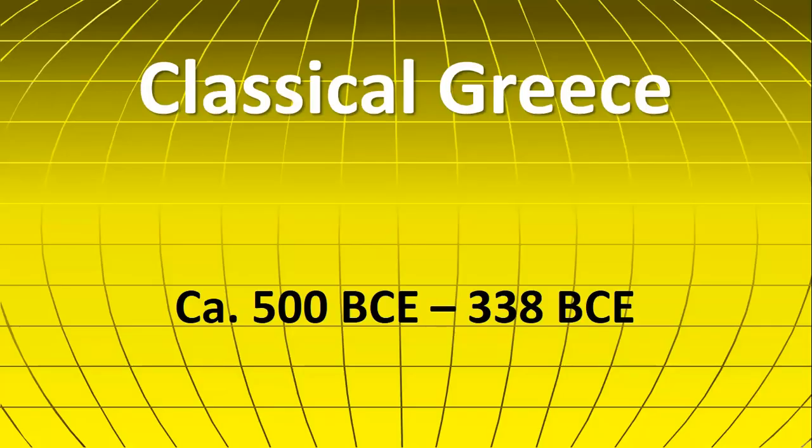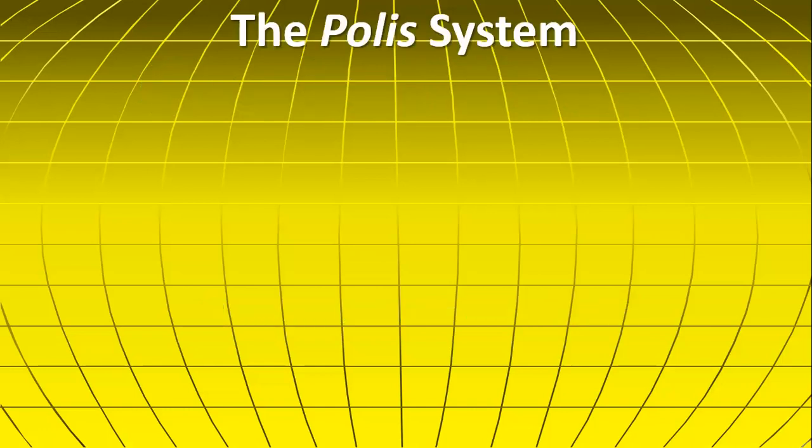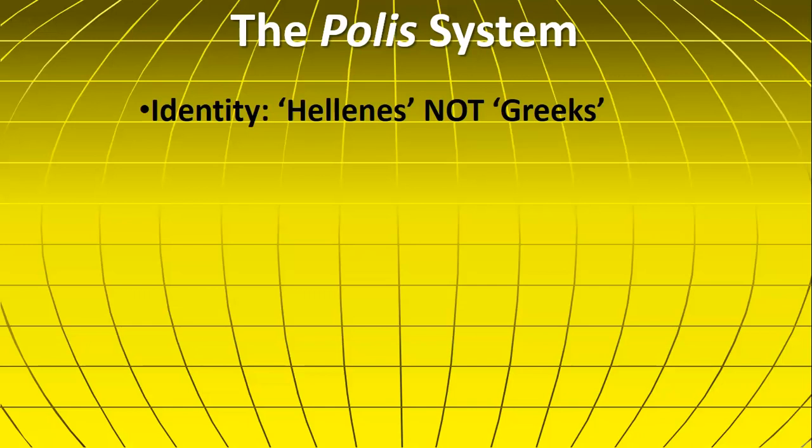That takes us into the classical period of ancient Greece. The system that was used was called the Polis system — Polis is a word that means city-state. The Greeks did not call themselves Greeks; they called themselves Hellenes. They all thought they were descendants from a figure named Hellene, the survivor of a flood. They recognized they didn't have the same government — they were city-states — but they did speak the same language and worshipped the same gods.